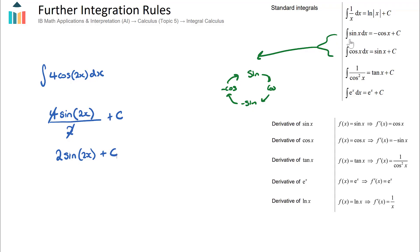The integral of 1/cos²x is equal to tan x + c. Although the proof is not required in this course, from the further differentiation video we know that if f(x) = tan x, we can rewrite tan x as sin x / cos x and apply the quotient rule, which gives the derivative as 1/cos²x. So the integral of 1/cos²x is simply tan x + c.